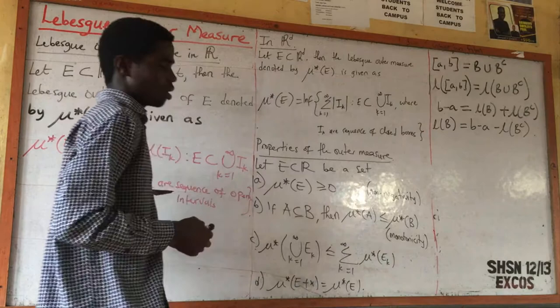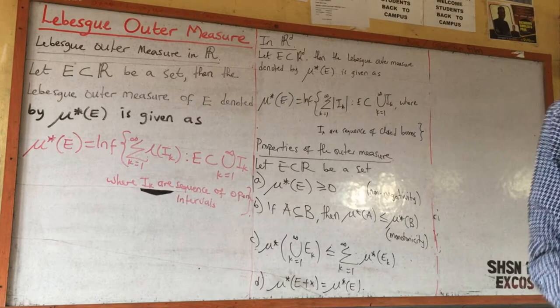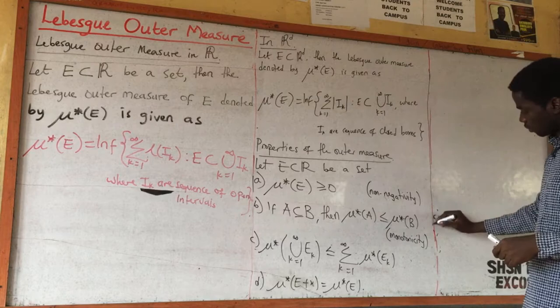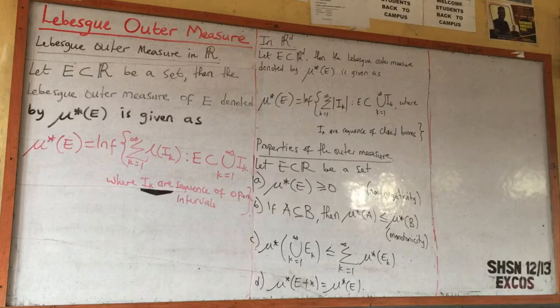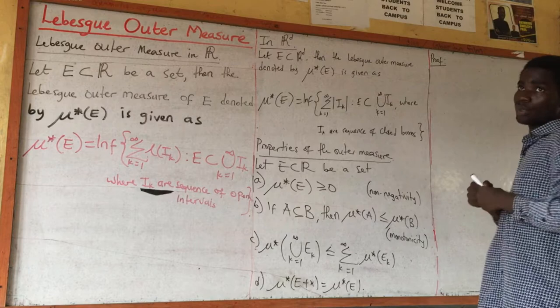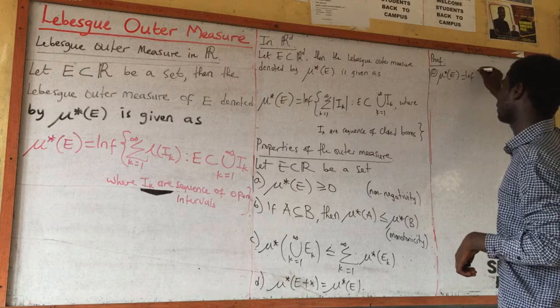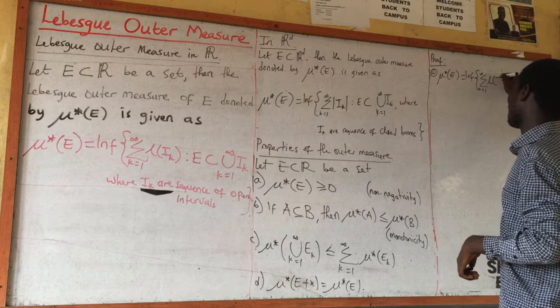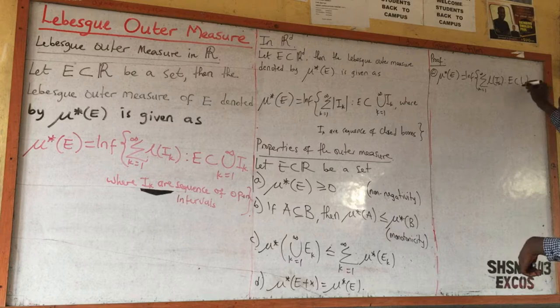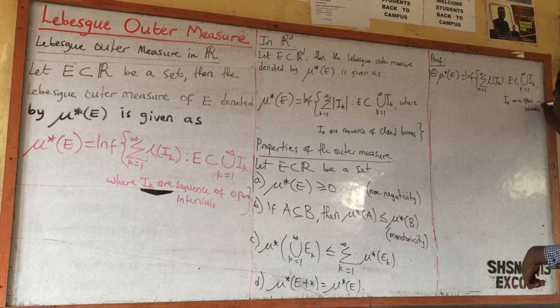We are going to prove all these properties. For the first proof, we recall that the outer measure of E is defined as the infimum of the summation from k=1 to infinity of the length of I_k, such that E is contained in the union from k=1 to infinity of I_k, where I_k is a sequence of open intervals.